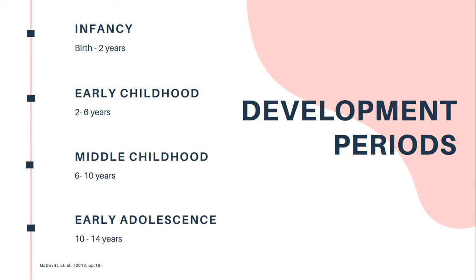Child development can be studied in time periods. Today we will look at four different time periods: beginning at infancy, which is from birth to two years; followed by early childhood, from two to six years; then middle childhood, six to ten; and finally early adolescence, from ten to fourteen years. Whilst child development can be explored in time periods, it is crucial to remember that these are only a rough guide and all children develop in their own time and way.